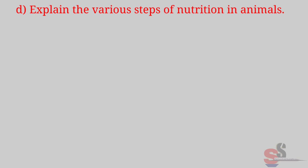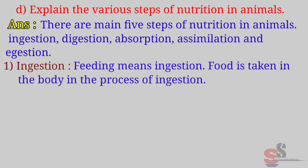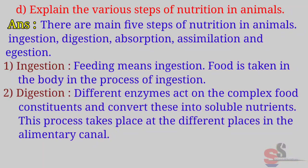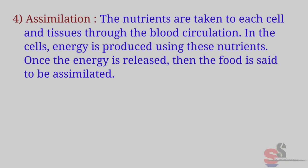D. Explain the various steps of nutrition in animals. Answer: There are five steps of nutrition in animals — ingestion, digestion, absorption, assimilation, and egestion. Ingestion: food is taken into the body. Digestion: different enzymes act on the complex food constituents and convert these into soluble nutrients; this process takes place at different places in the alimentary canal. Absorption: the digested soluble nutrients are absorbed into the blood.